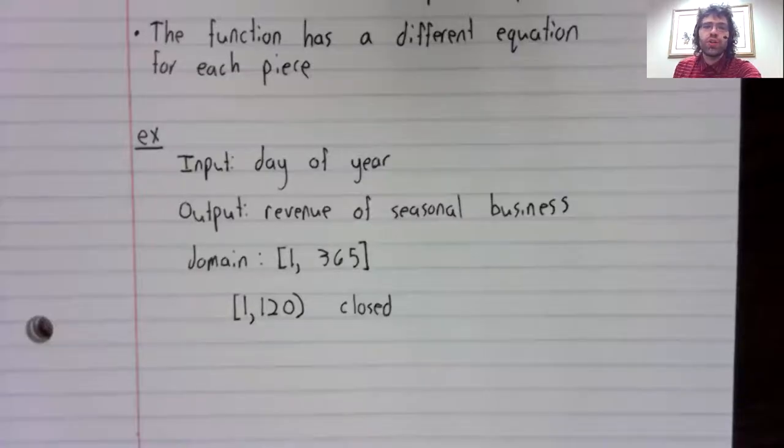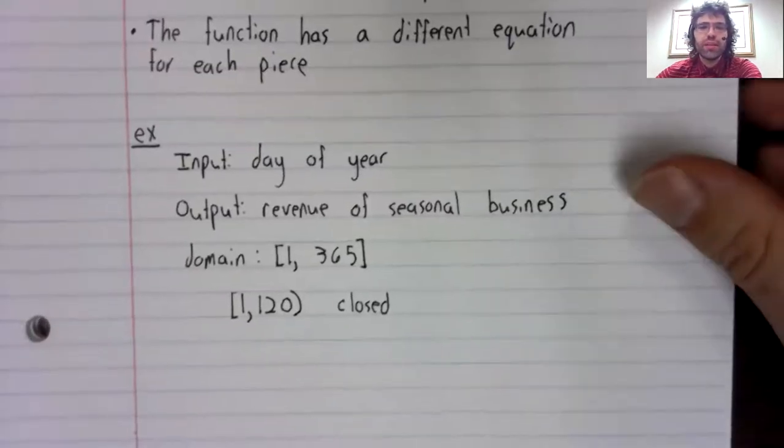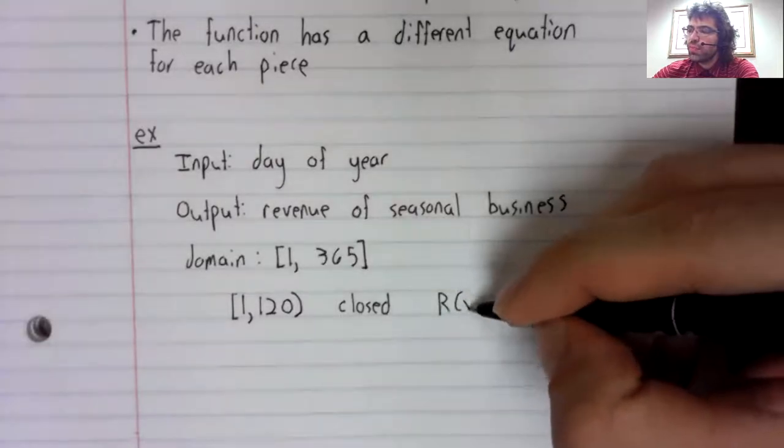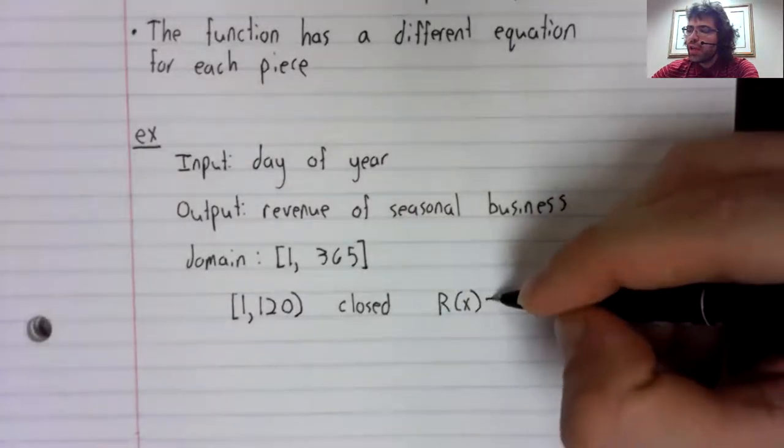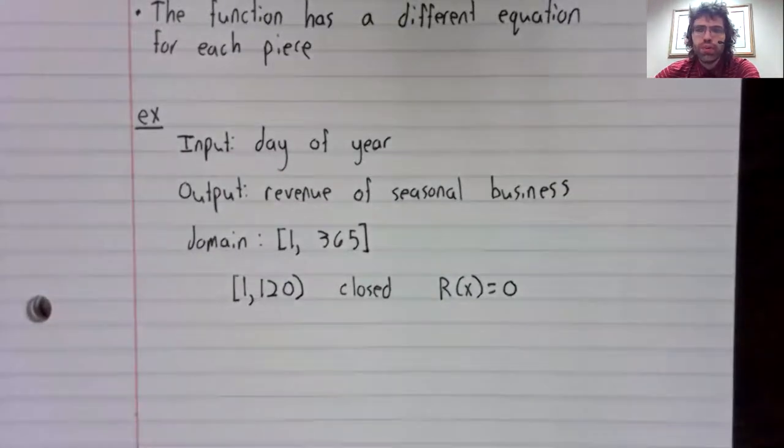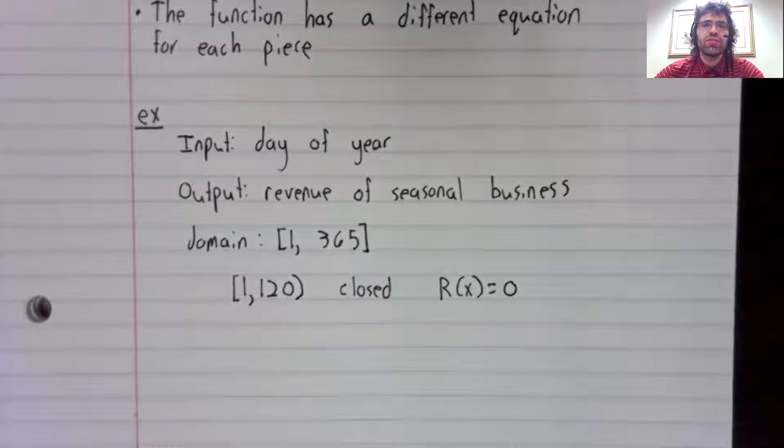So from days one to 120, this business is closed and it is not earning any revenue. The revenue function is the constant zero.